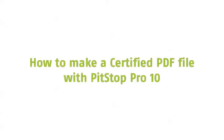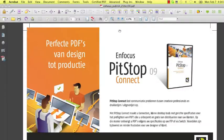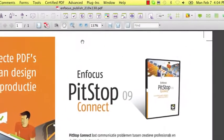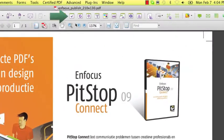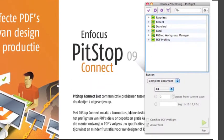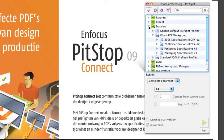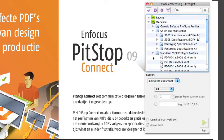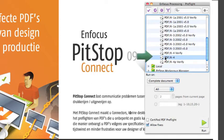How do you make a certified PDF file with BitStop Pro-10? First, we go and click on the PreFlight Profiles icon in the toolbar. The MFocus Processing PreFlight panel opens, and we go and select the PreFlight Profile that we would like to use.